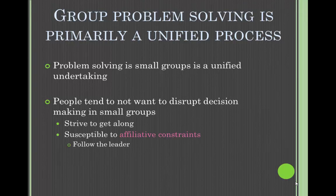The second assumption is that group problem-solving is primarily a unified process. Problem-solving in small groups is a unified undertaking. People tend to not want to disrupt decision-making when they are in small groups — they strive to get along. However, they are susceptible to affiliative constraints, which are when members withhold their input rather than face rejection from the group. They tend to follow the leader approach when making a decision.